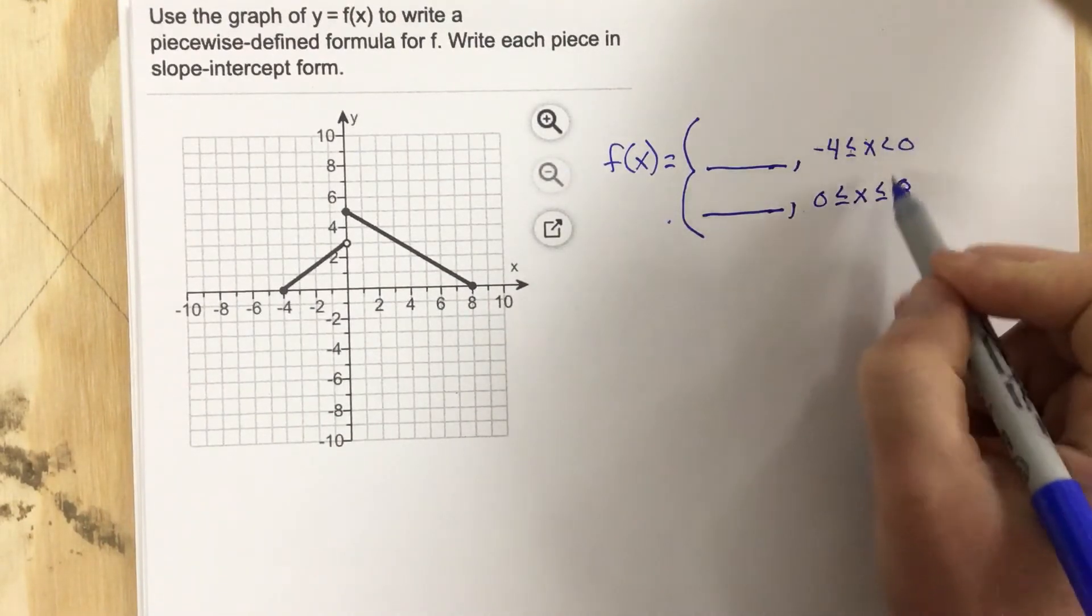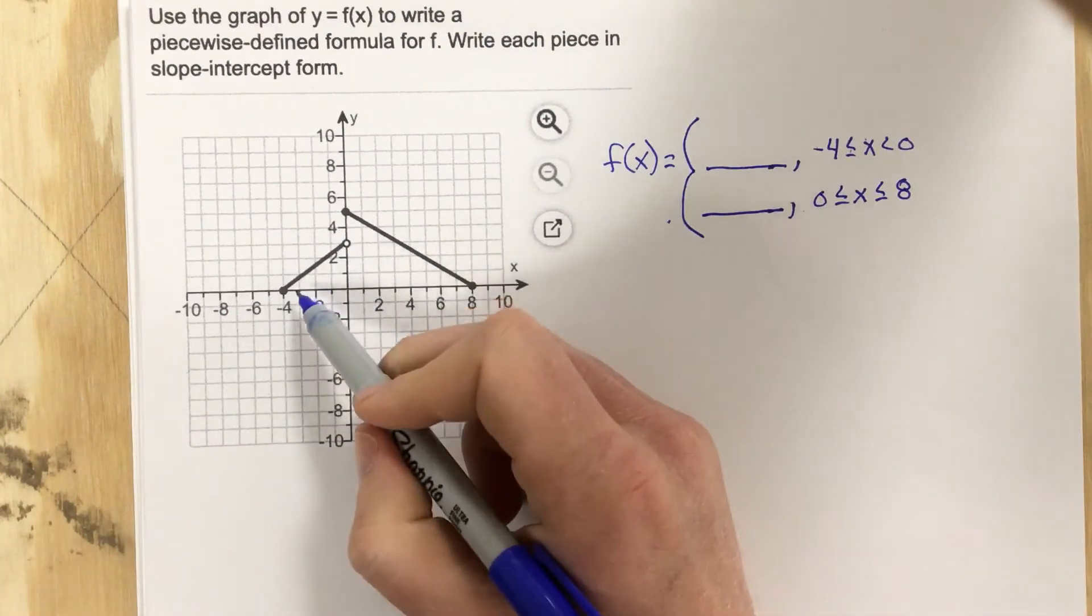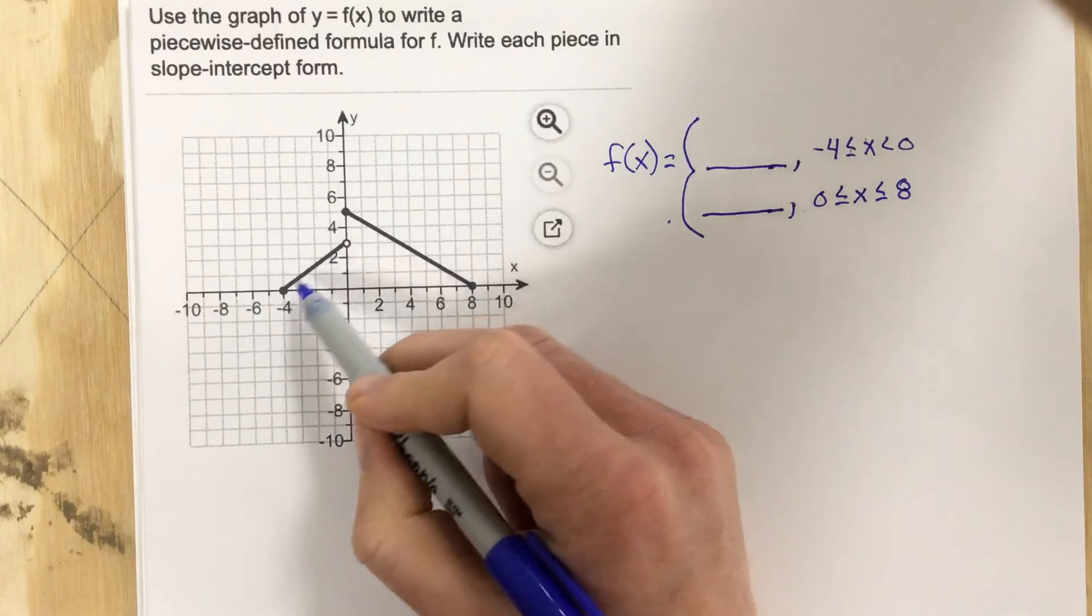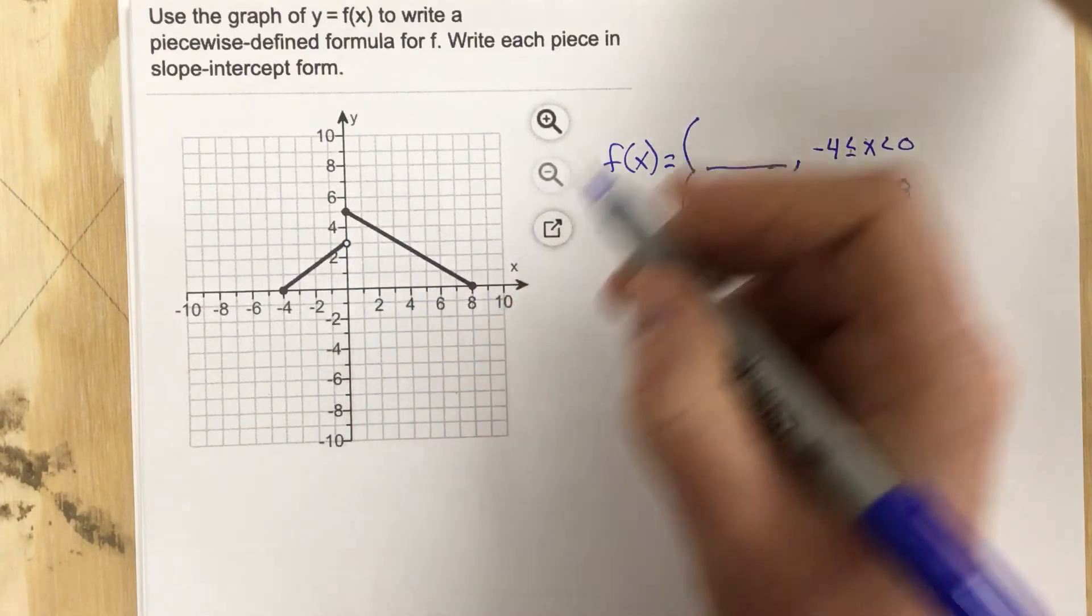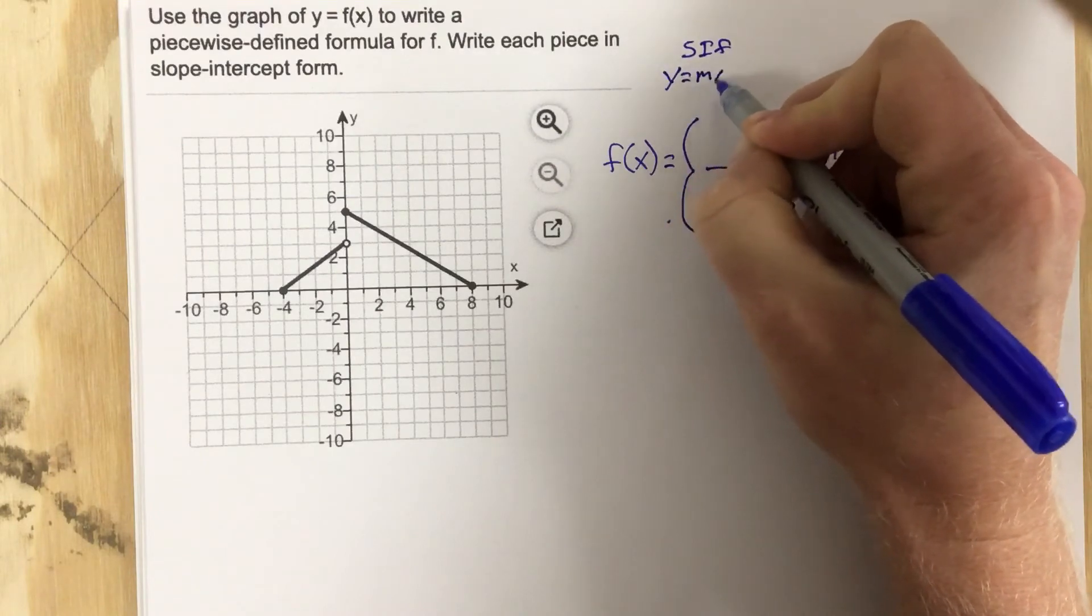So once I get the domains figured out, now I can actually write the equations for the function. Now they're both lines, so because they're lines, we know we're going to use slope-intercept form, which is y equals mx plus b.